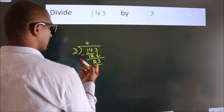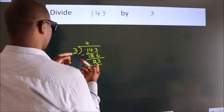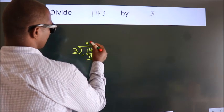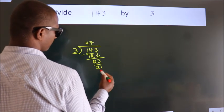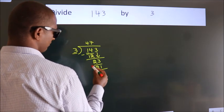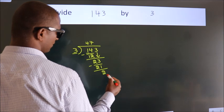A number close to 23 in the 3 table is 3 sevens, 21. Now we subtract. We get 2.